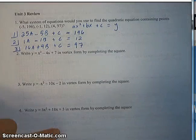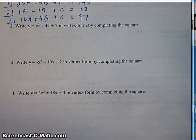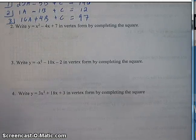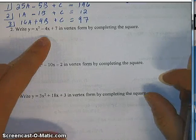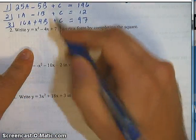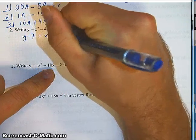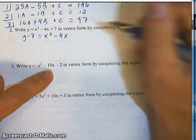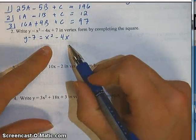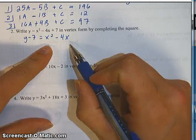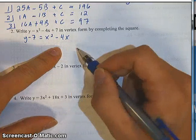Number two: we are going to write y equals x squared minus 4x plus 7 in vertex form. The first step is always the same — we want to get the x squared and the x components by themselves, so I'm going to subtract that 7 over to the other side: y minus 7 equals x squared minus 4x. At this point, you want to ask yourself: how do I turn this into a perfect square trinomial? The way you do that is you take the b value — what's in front of the x — cut it in half and square it.